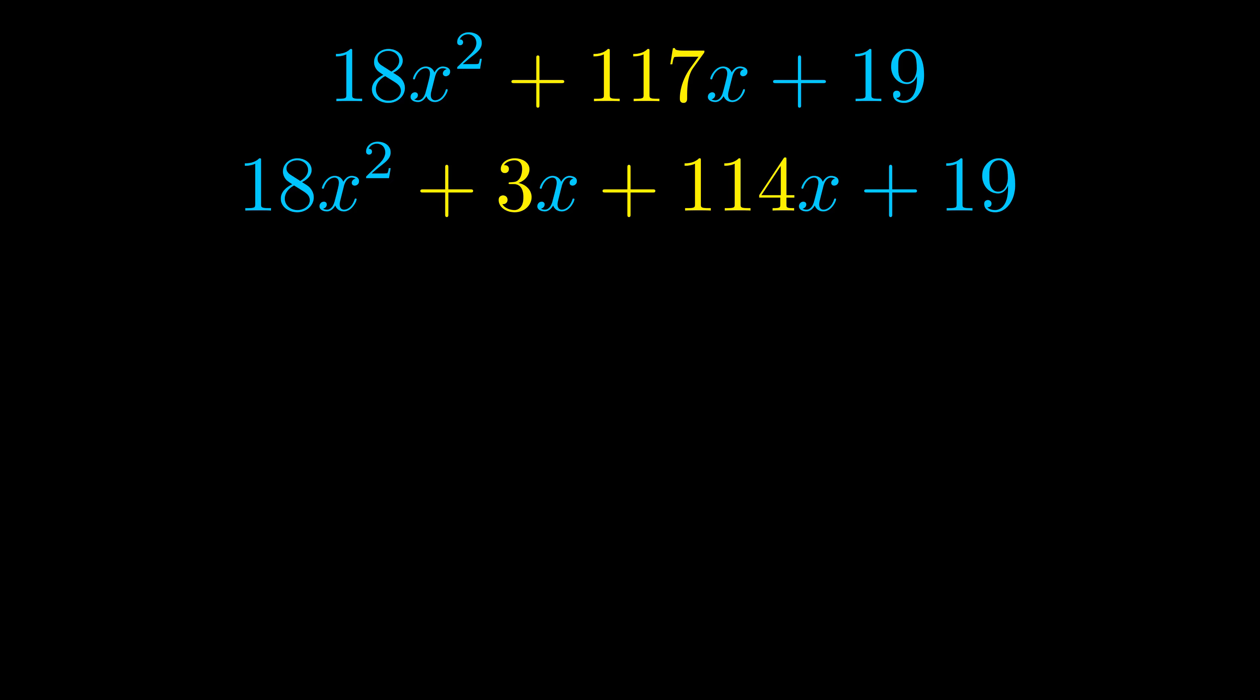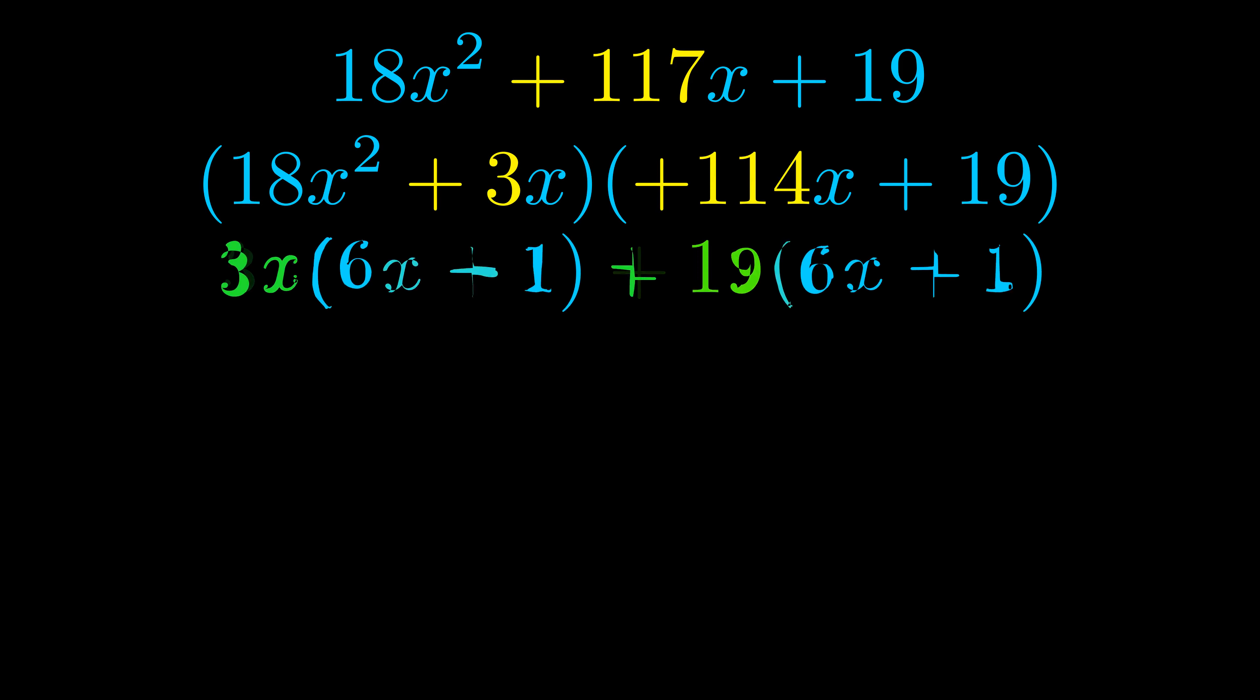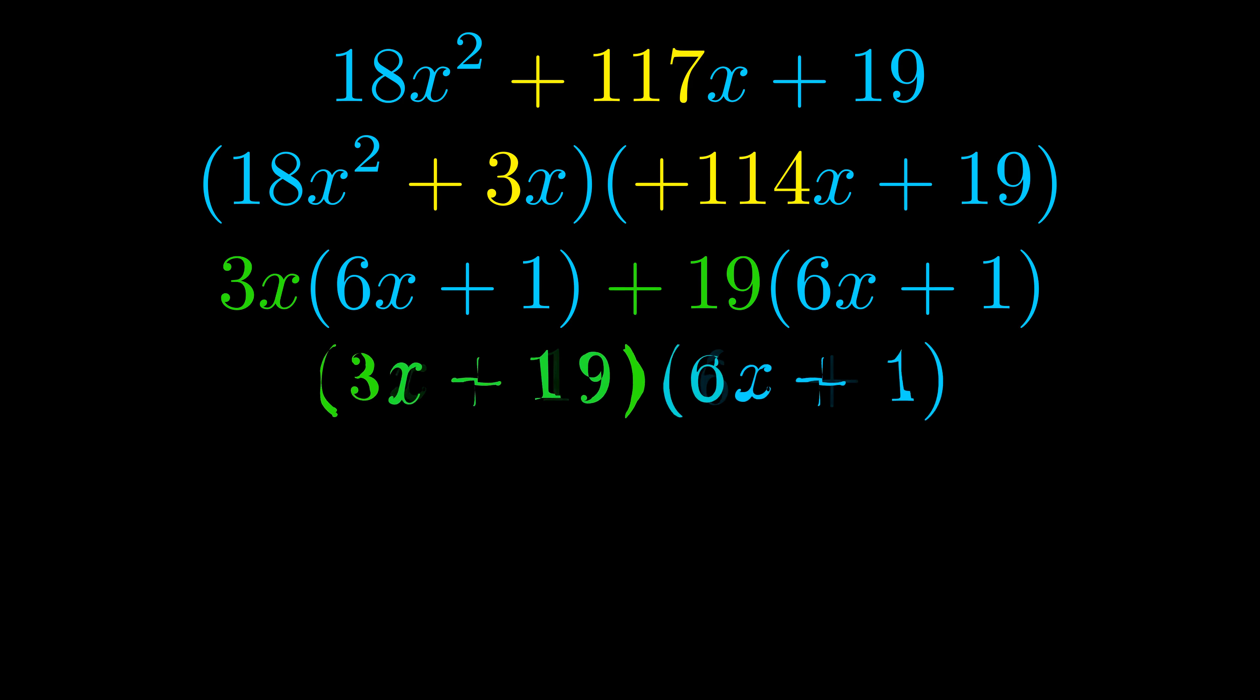Once we've done this we go ahead and we put parentheses around the first term and the last term and we do that so that we can take the greatest common factor out of both terms. We can see the greatest common factor is now outside in green. Notice also how what remains inside of the parentheses is the same in both cases. The blue values are the same.